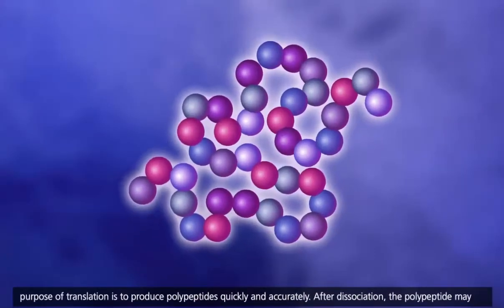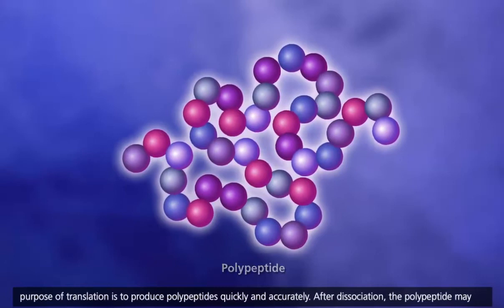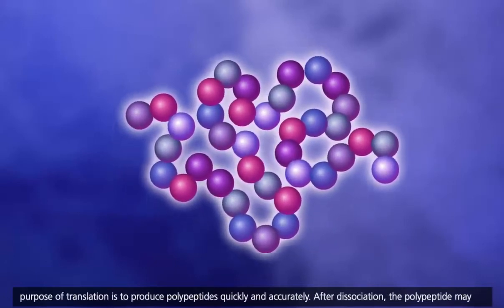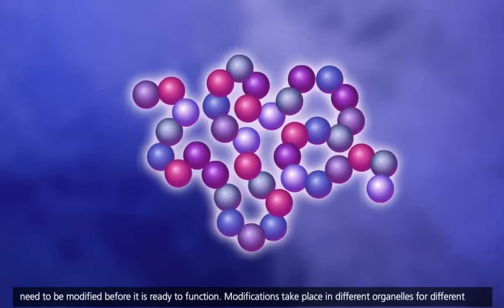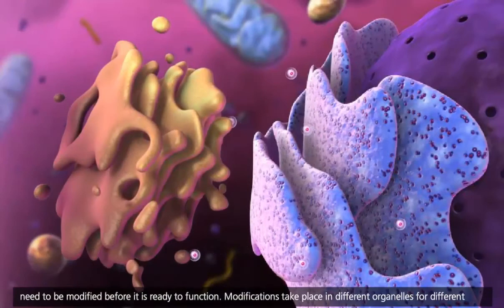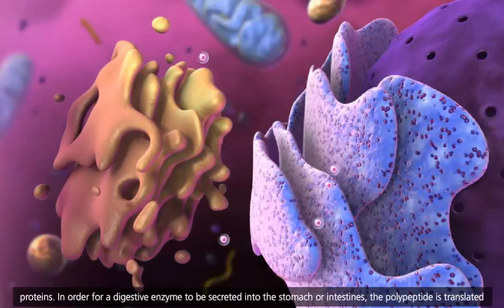The purpose of translation is to produce polypeptides quickly and accurately. After dissociation, the polypeptide may need to be modified before it is ready to function. Modifications take place in different organelles for different proteins.